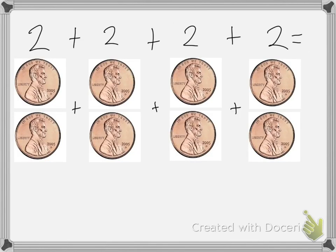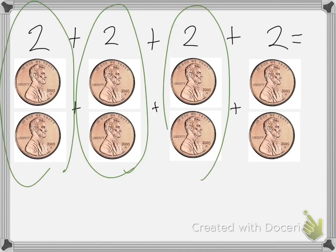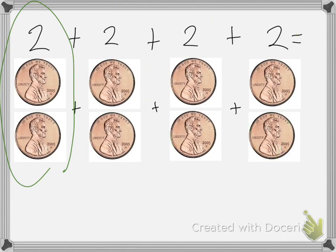Here I have 4 groups of 2 pennies. You can see each of these groups has 2 pennies in them, and I have 4 of them. So normally I would do 2 plus 2 plus 2 plus 2. So I have a total of 8 pennies.